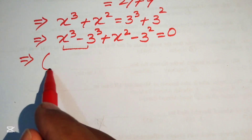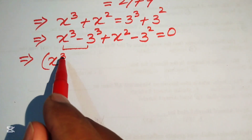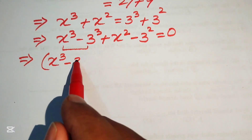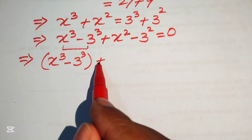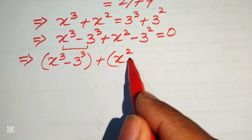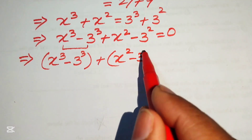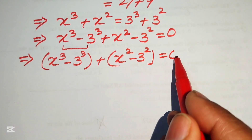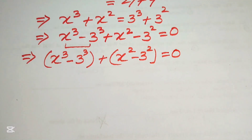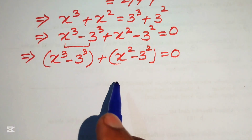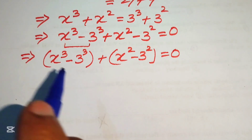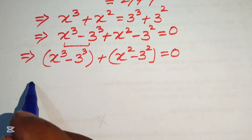In the next step, we combine these terms by pairing the cubic terms together and the square terms together. This is written as x cubed minus 3 cubed, plus x squared minus 3 squared, equals 0. Now we apply the cubic and square difference formulas to each pair.